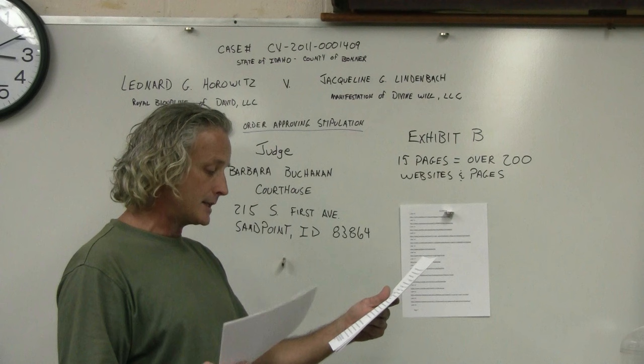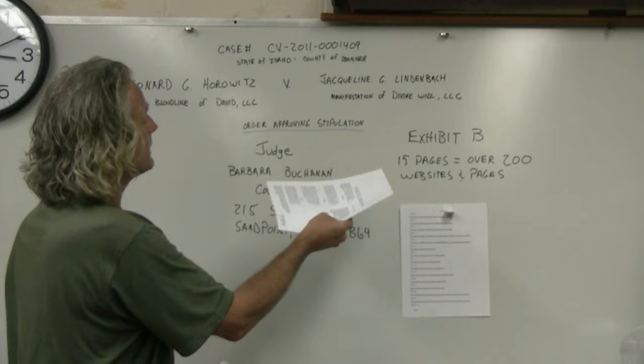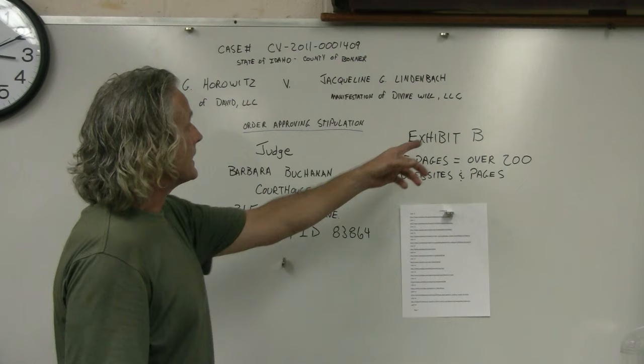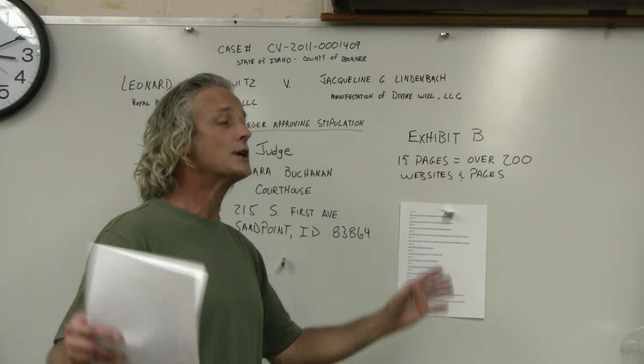And then they further said Jacqueline Lindenbach will submit Exhibit B of all the websites she wants taken down, and Leonard G. Horowitz submits Exhibit B of all the websites he wants taken down. Now, Exhibit B, which I have, I only printed off the one that I'm on, but there's 15 pages. It's over 200 websites and pages that Leonard Horowitz was able to submit to a court to have taken down, to be shut down or blocked through a divorce proceeding. And it's in here.